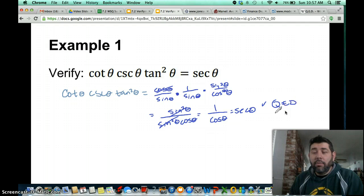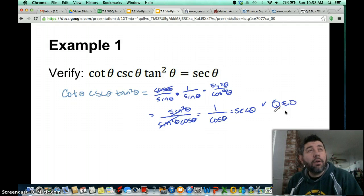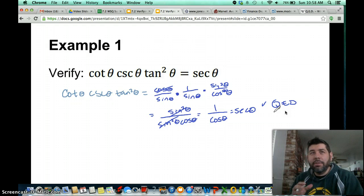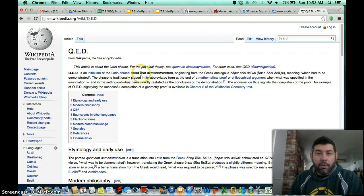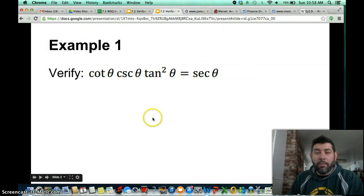All right, so we've shown that this side is equal to secant theta. And we can either put a check mark. I use QED, which stands for, let's see if I can remember this, quad error demonstratum, which is that which had to be demonstrated. And we use a lot of mathematics to show that we finished a proof. So QED, you can just type in QED and Google it, and it'll tell you what it is.